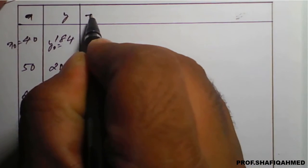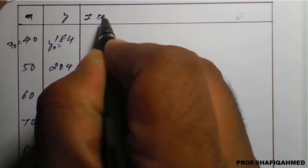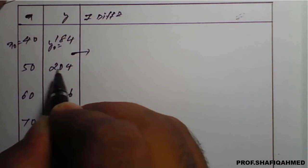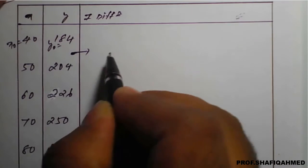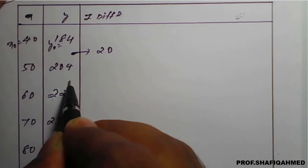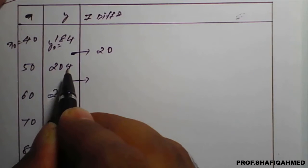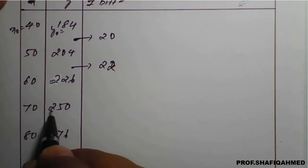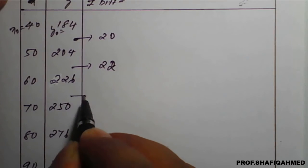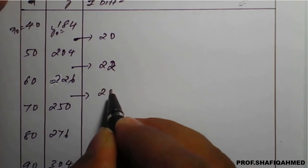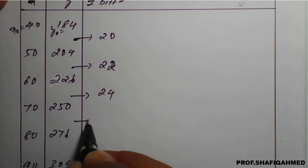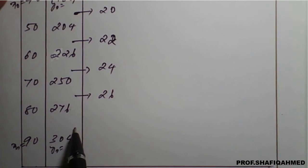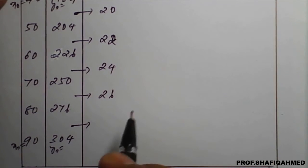I will use first difference in short. First difference: 204 minus 184 gives 20; second difference: 226 minus 204 gives 22; next 250 minus 226 gives 24; 276 minus 250 gives 26; and 304 minus 276 gives 28.